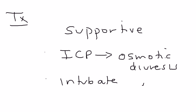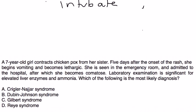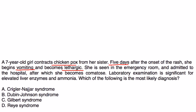Clinical vignette: a seven-year-old girl contracts chicken pox from her sister. Five days after the onset of the rash, she begins vomiting and becomes lethargic. She is seen in the emergency room and is admitted to the hospital, after which she becomes comatose. The lab exam is significant for elevated liver enzymes and ammonia. Which of the following is most likely?